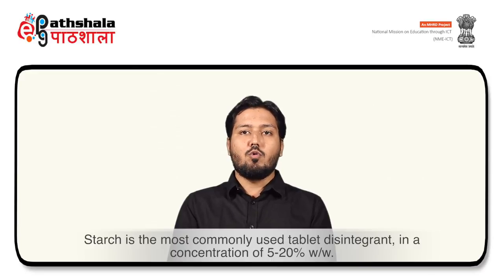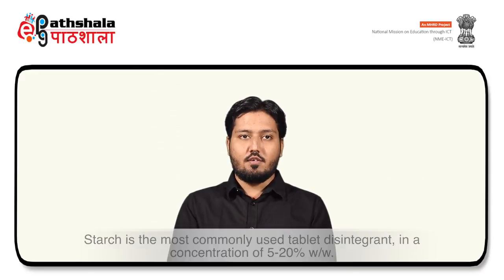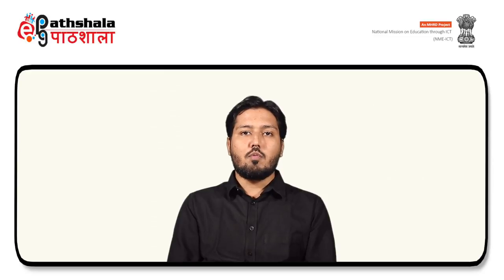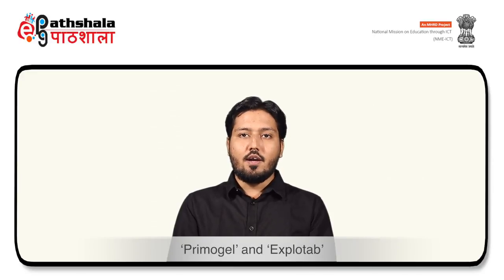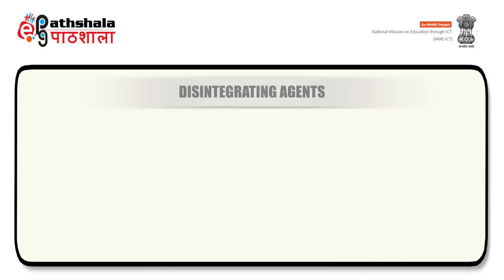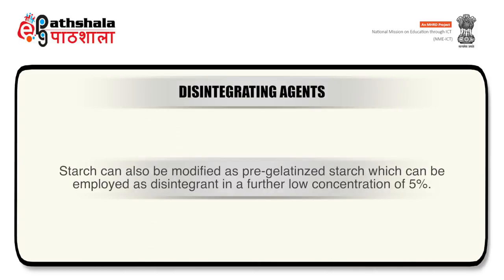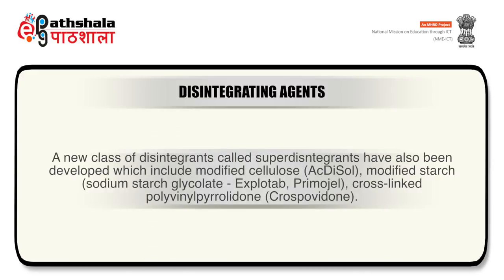Certain low-substituted carboxymethyl starches called modified starches have been developed which can be used in low concentrations of 1 to 8%; examples include Primogel and Explotab. Starch can also be used as modified pre-gelatinized starches, which can be employed as disintegrant at a further low concentration of 5%. A new class of disintegrants called superdisintegrants has also been developed, which include modified cellulose, modified starch, and crosslinked polyvinyl pyrrolidone.